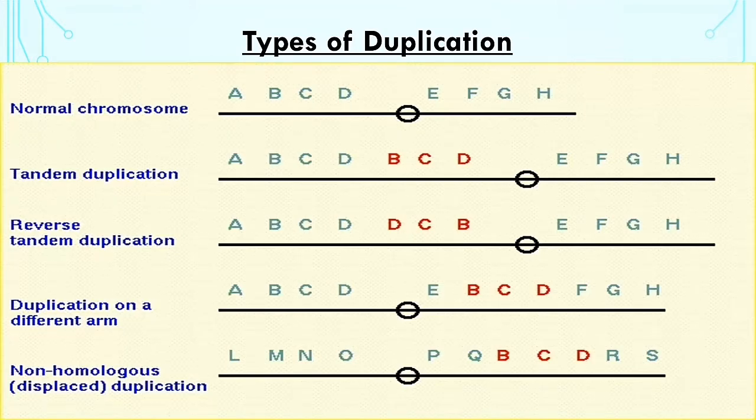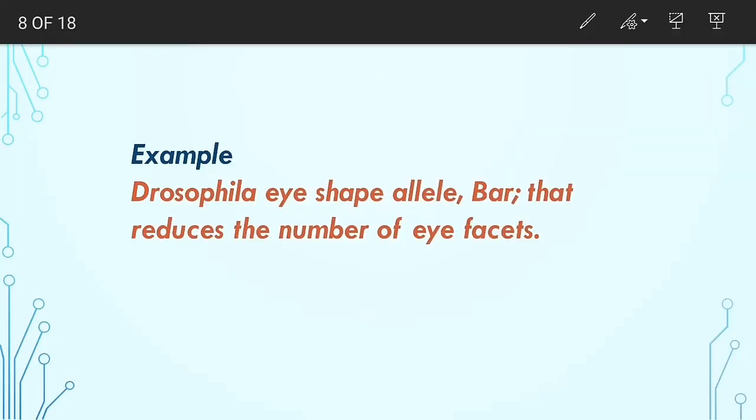In duplication on a different arm, a sequence is copied from one arm to another arm of the same chromosome. In displaced duplication, a sequence is copied from one chromosome to its non-homologous chromosome.